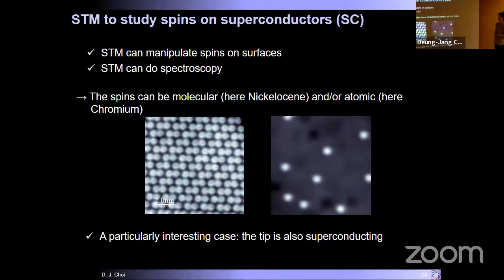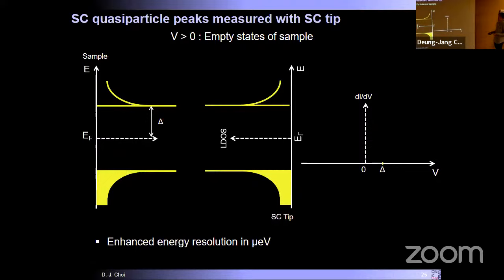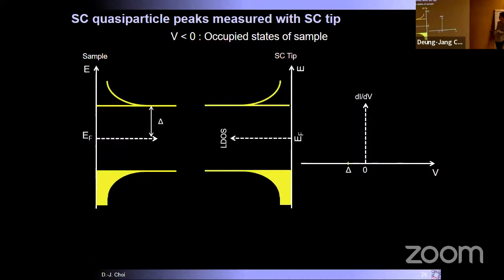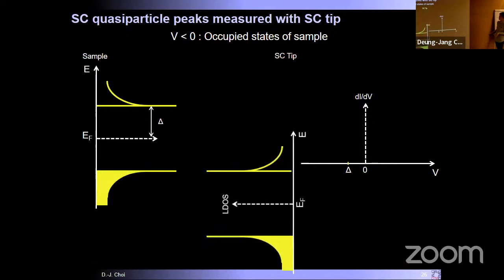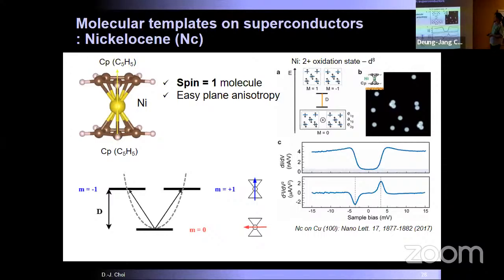STM can manipulate spins on surfaces and perform spectroscopy. For our study, we use nickelocene molecules as molecular spins and chromium atoms as atomic spins. Particularly interesting physics arises when using a superconducting tip. Thanks to the very sharp quasi-particle peak of the superconducting tip, we can enhance the energy resolution to the microelectronvolt range. Sweeping positive bias shows the electron-side quasi-particle peak at +2Δ, and negative bias shows the hole-side peak at -2Δ.